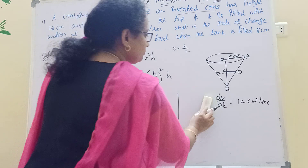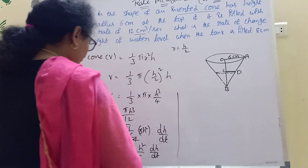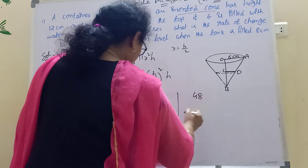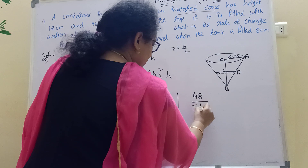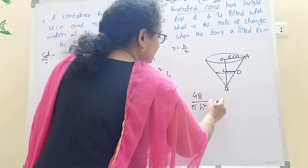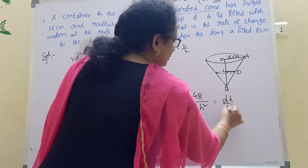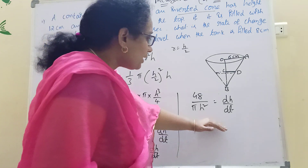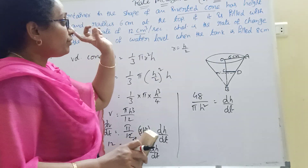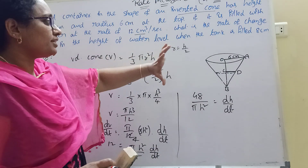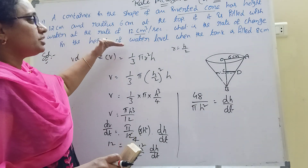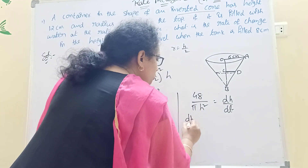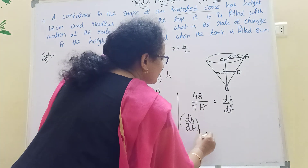Now solving for dh by dt: we are given dV by dt equals 12. When the tank is filled with 8 cm, h equals 8. Substituting: 12 equals pi times 8 squared by 4 times dh by dt.